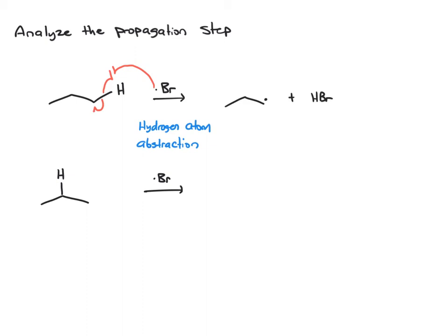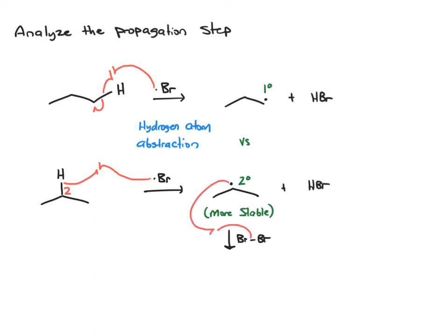We've talked about radical stability. As you look at these, you should immediately spot the primary radical versus the secondary radical, and we know the secondary is more stable. This is a lower energy pathway, so it's the favored pathway for the reaction. This secondary radical will then react with Br2 — this electron will take one of the bromine atoms — giving us the product plus a bromine radical that will continue the propagation. So this is the favored pathway.